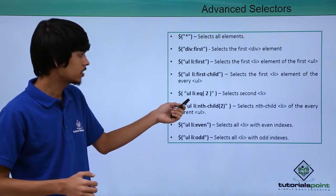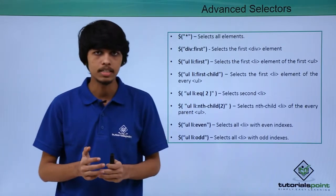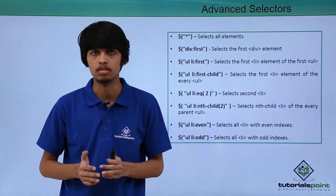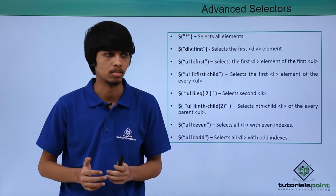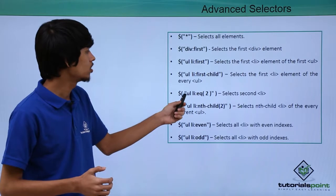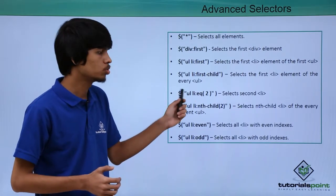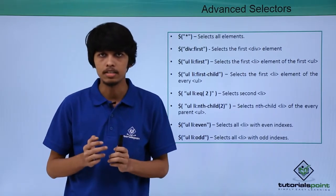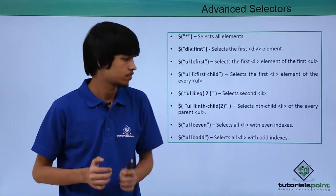The next selector is :eq(). If we want to select any element based on the index number, then we can use the equal selector. Here we have done dollar ul li :eq(2), so this will select the second list item in the unordered list.